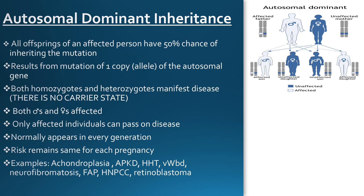Speaking of autosomal dominant inheritance, all offspring of an affected person will have a 50% chance of inheriting the mutation. Only one copy or allele of the autosomal gene is needed for the disease to manifest. Both male and female children will be affected, and only affected individuals can pass on the disease. Normally, it appears in every generation. Here, the father has one mutated gene, and this results in 50% of his offspring being affected whereas the other 50% are unaffected.